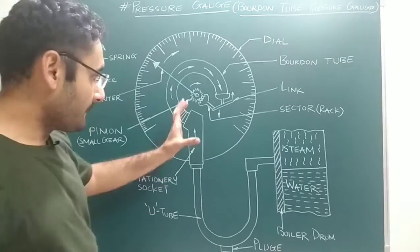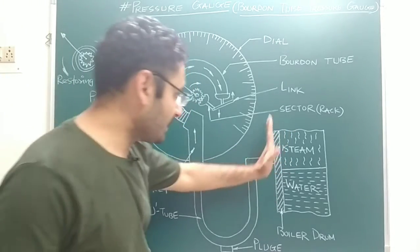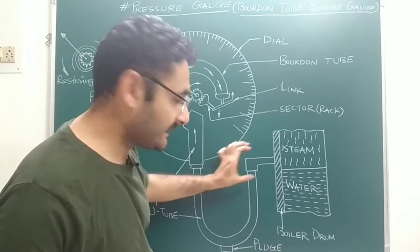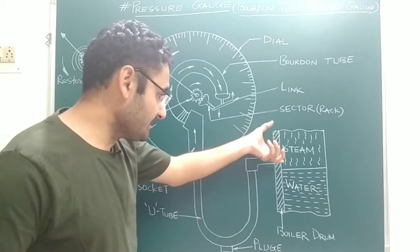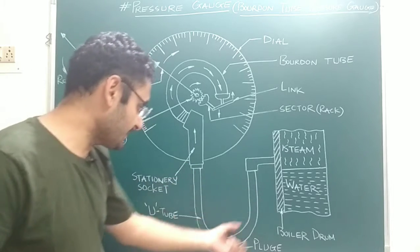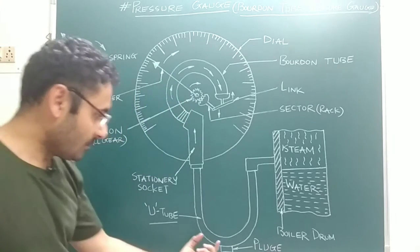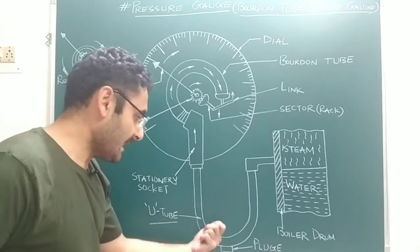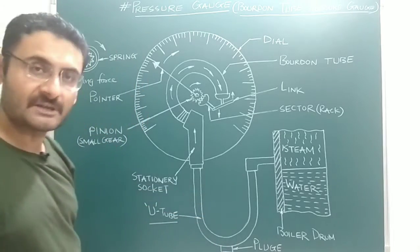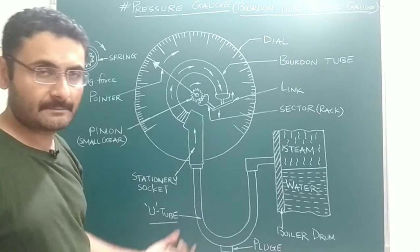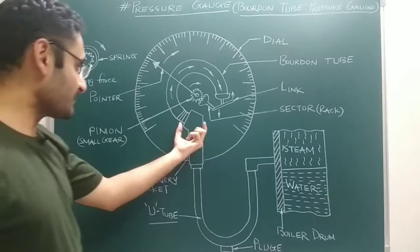Now for construction: the pressure gauge is connected with the steam portion of the boiler drum. The steam portion of the boiler is connected with a U-tube. The U-tube is connected with one plug. The use of that plug is that when you open it, any dust, dirt, and scaling inside the pressure gauge can be removed — so the plug is used for cleaning purposes.